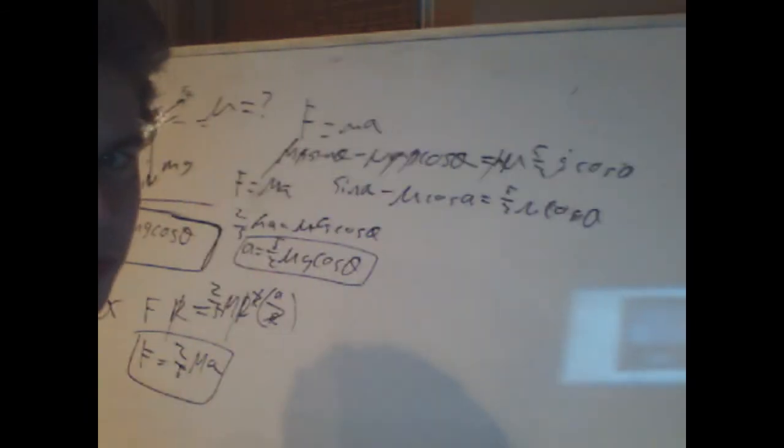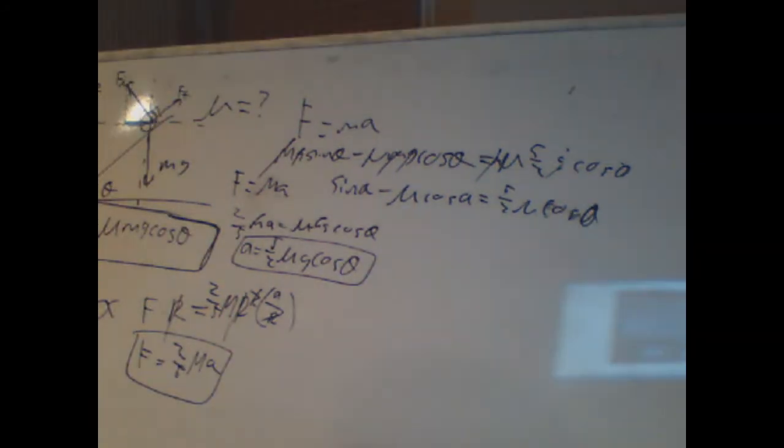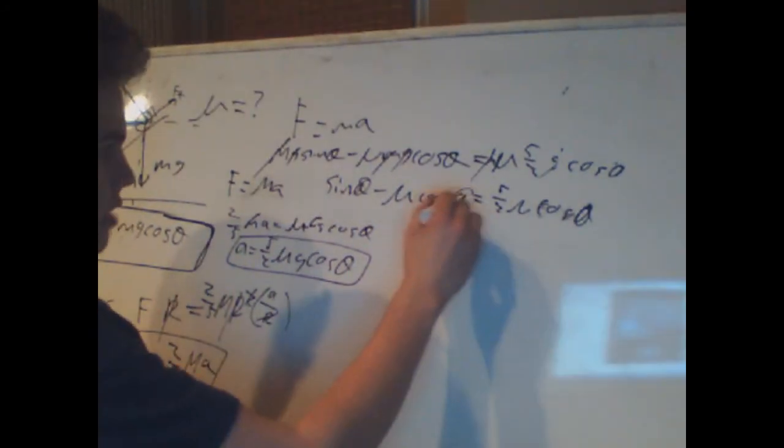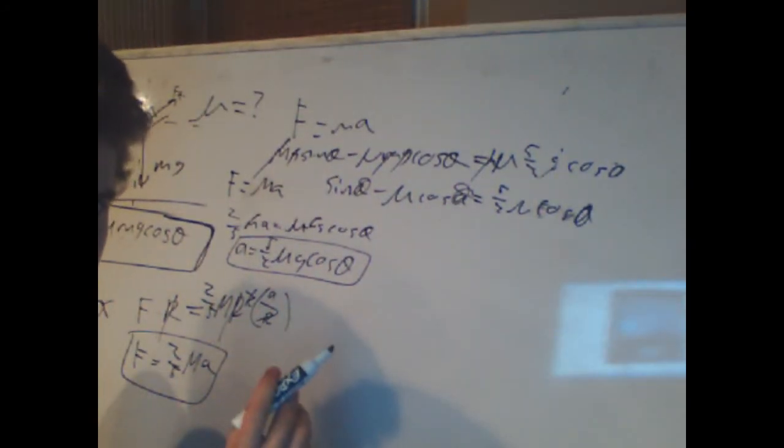So mg sine theta minus mu mg cosine theta equals m 5/2 mu g cosine theta. Actually, there is an m here. So all these m's cancel as well as g's. So you're left with sine theta minus mu cosine theta equals 5/2 mu cosine theta.